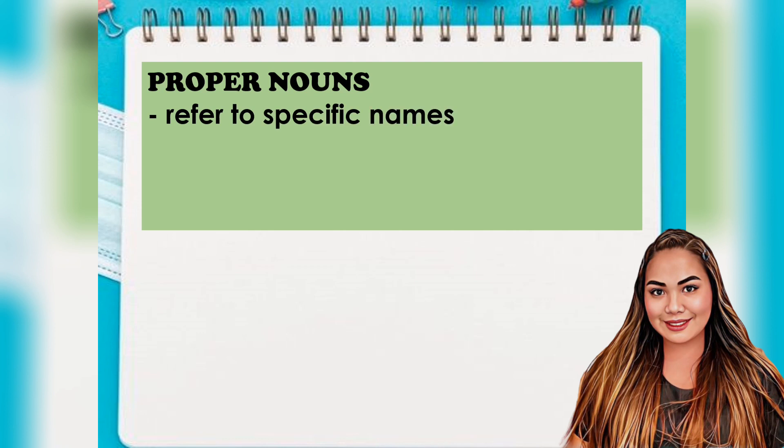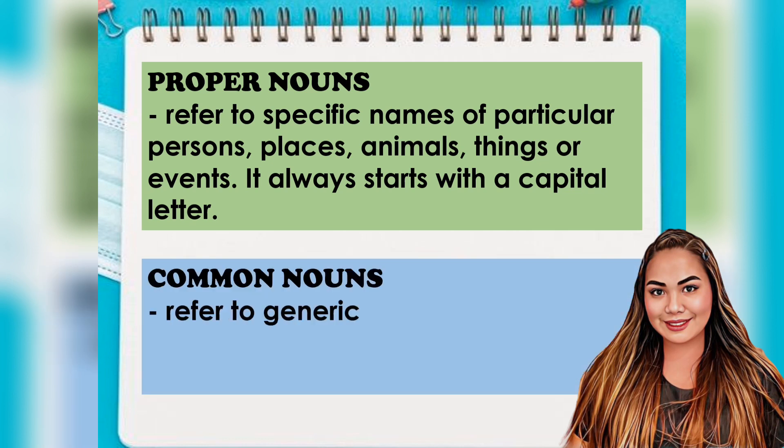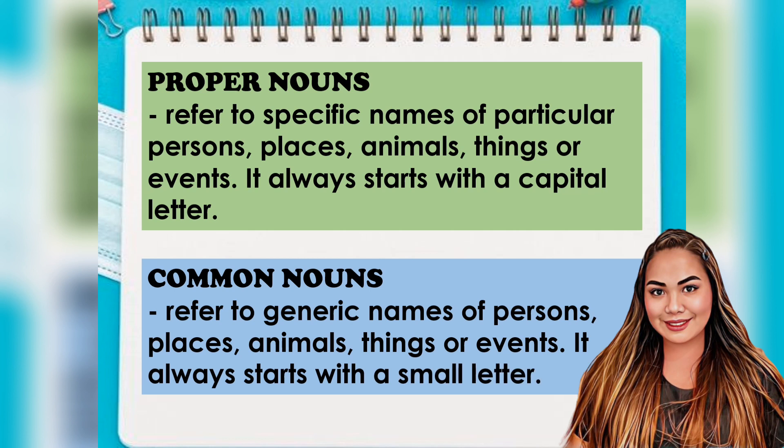Proper nouns refer to specific names of particular persons, places, animals, things, or events. It always starts with a capital letter. Common nouns refer to generic names of persons, places, animals, things, or events. It always starts with a small letter.